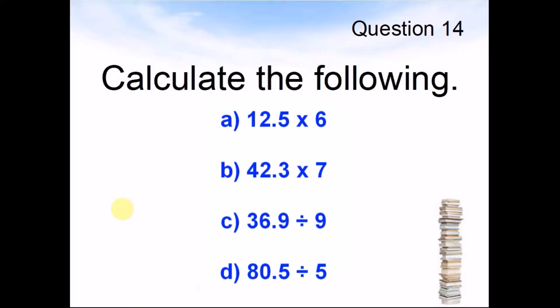Question 14. Calculate the following. A: 12.5 times 6 equals what? B: 42.3 times 7 equals what? C: 36.9 divided by 9 equals what? Pause the video and answer the question.